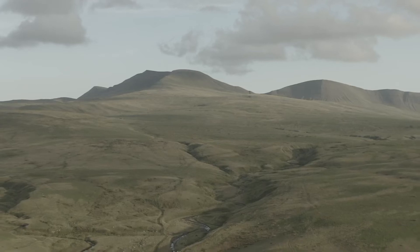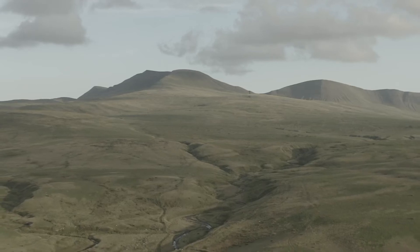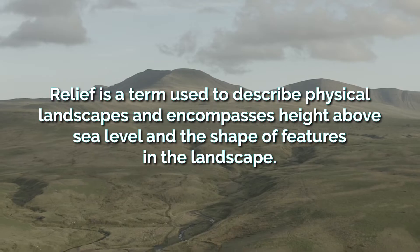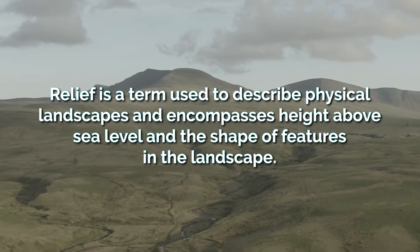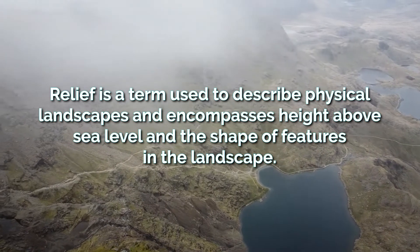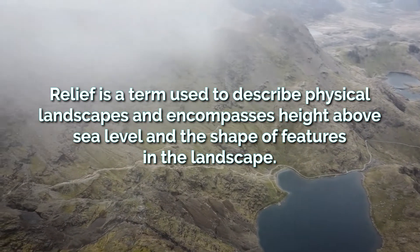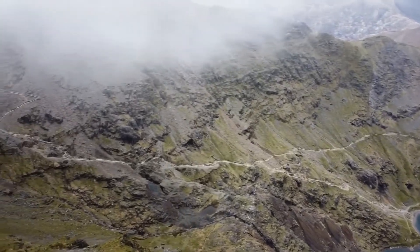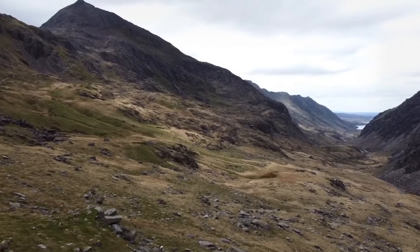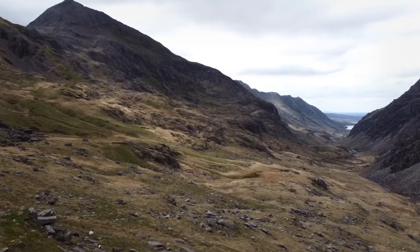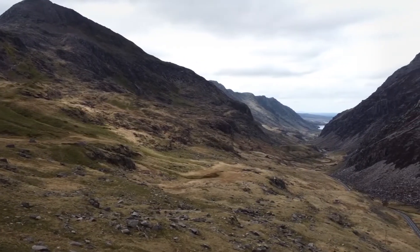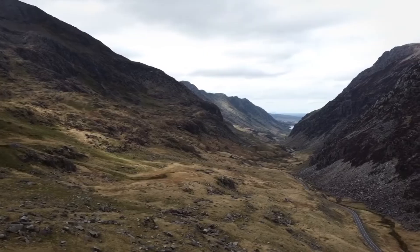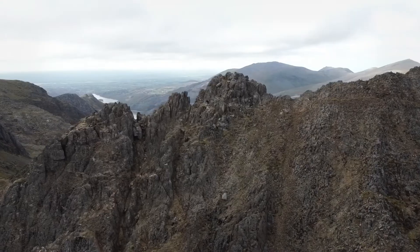The UK's physical landscapes vary throughout different parts of the country. Relief is a term used to describe physical landscapes and encompasses height above sea level, steepness and the shape of features in the landscape. In the UK, much of the varied landscapes are the result of different rock types. Upland areas typically feature strong rock types such as granite, whereas weaker rocks such as clay are found in low-lying areas.